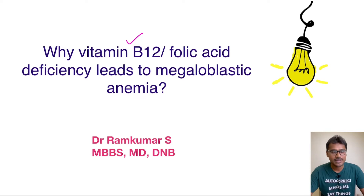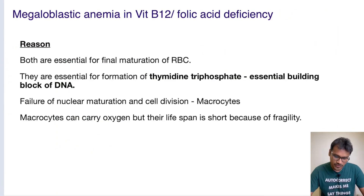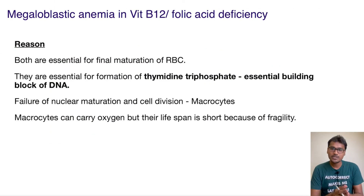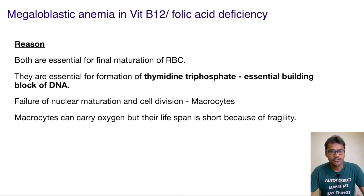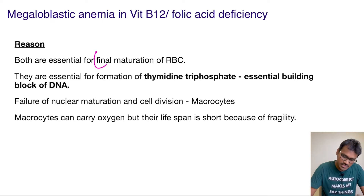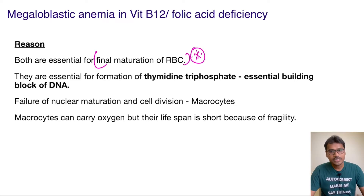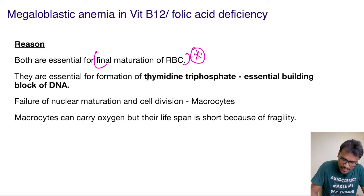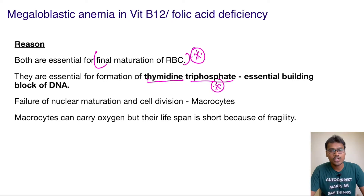Both vitamin B12 and folic acid are very essential for the final maturation of RBCs. What they help in is the formation of thymidine triphosphate. Thymidine is one of the structural components in DNA synthesis.